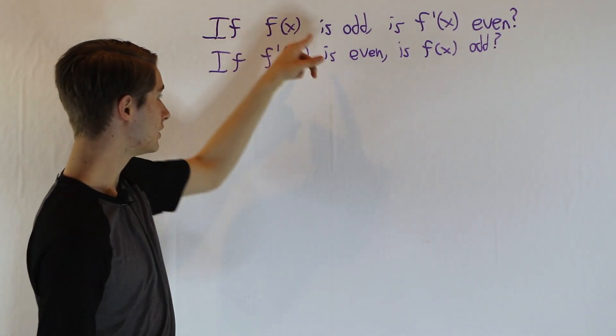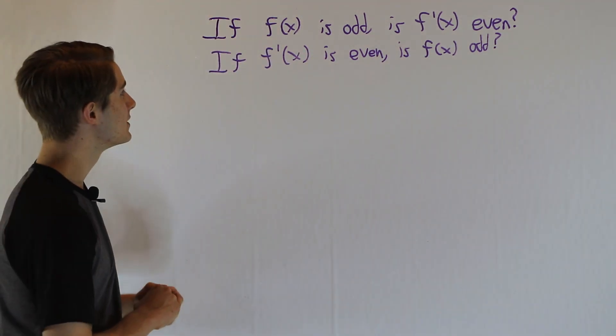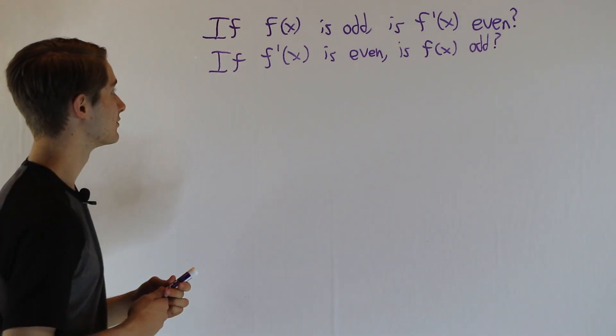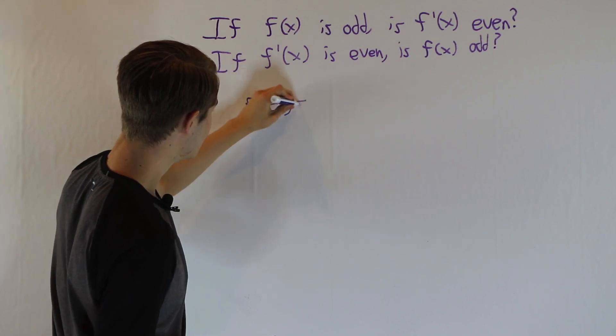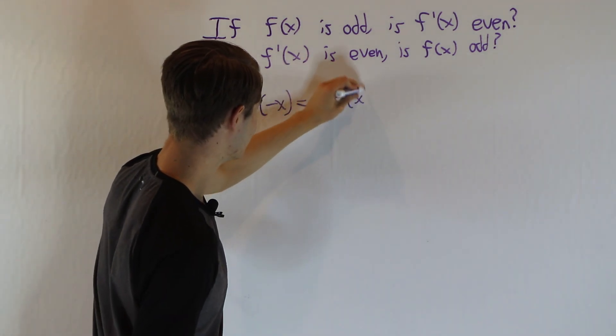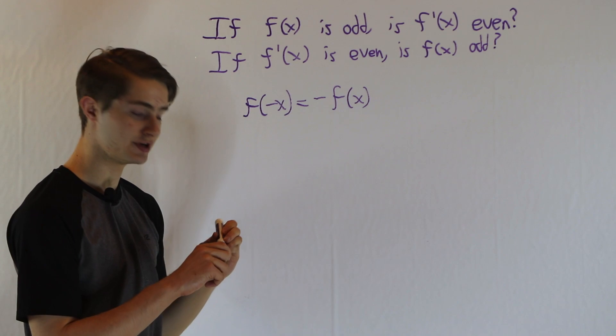We see that the second statement is the converse of the first statement. But let's look at this first one to start off with. If f of x is odd, what that means is f of negative x equals negative f of x. This is the definition of an odd function.